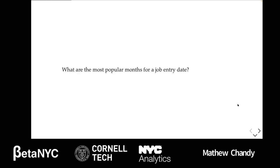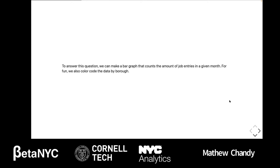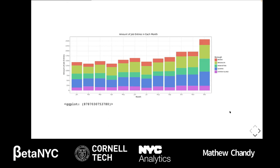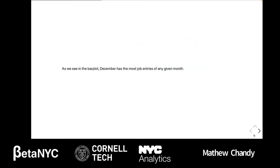We started with some plot ideas using Plot9, a Python package based on R's ggplot. Our first question was: what are the most popular months for a job entry date? A job entry date is the date where the entry is complete and payment has been made for the job. We made a bar graph counting job entries in a given month, color-coded accordingly. It seems relatively even throughout the months, except towards October, November, and especially December, which has the most entries. This is likely due to how we subsetted the data — we took most data from January and February, making it more likely that job entries were in the later months.